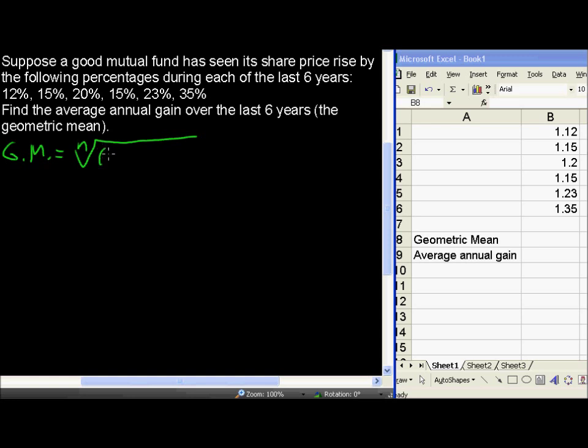It's the nth root of the product of the numbers in question: x sub 1 times x sub 2 dot dot dot times the last one x sub n.